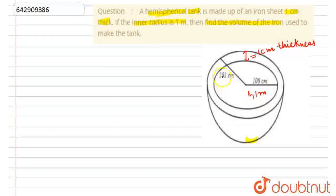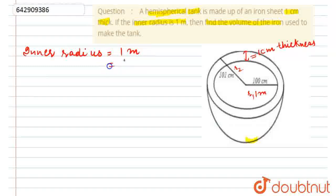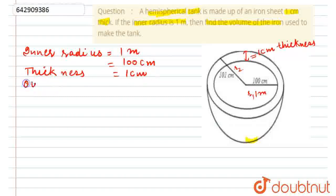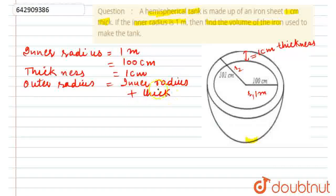So, inner radius r1 = 1 meter = 100 cm. We change the unit to centimeters. The thickness is given as 1 cm. Therefore, the outer radius equals inner radius plus thickness: outer radius = 100 + 1 = 101 cm.